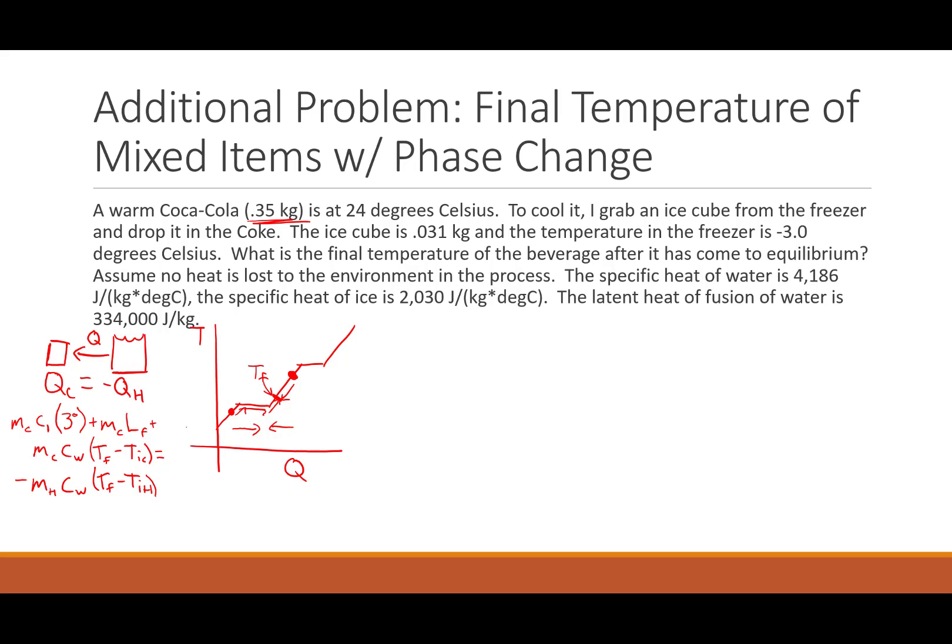So here's our equation. And since we know our final temperatures are the same, that's going to be our only unknown. So let's set up the equation over here and try and do the algebra to solve for this one. M_C C_I delta T ice plus M_C L_F plus M_C C_W T final minus T initial cold equals negative M_H C_W T final minus T initial hot. It's quite a lot going on here, but let's just plug in our numbers and simplify it as much as we can.